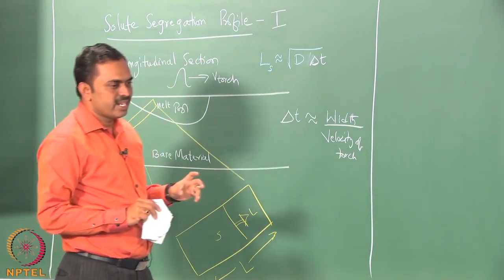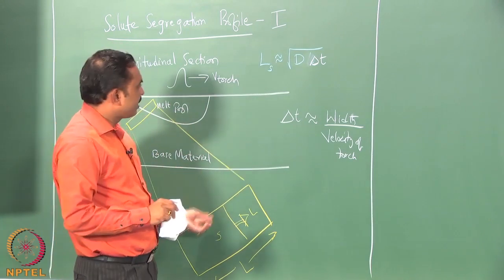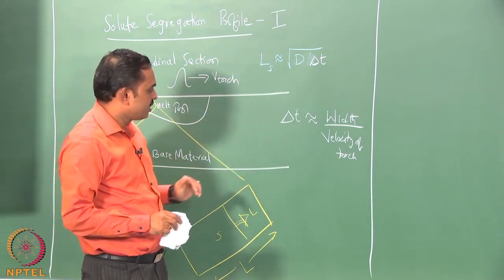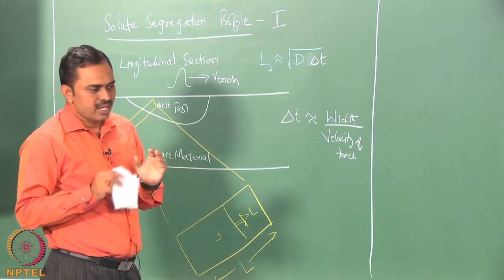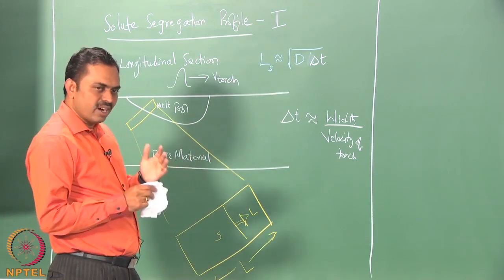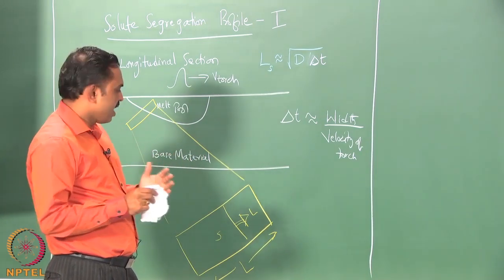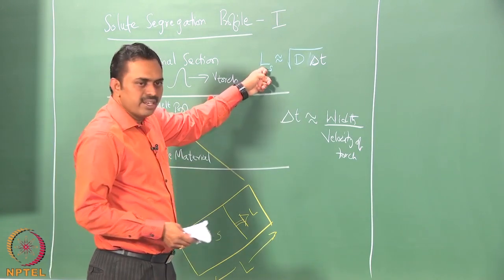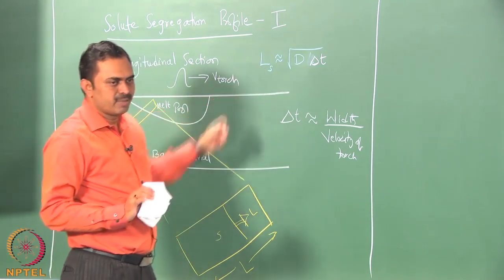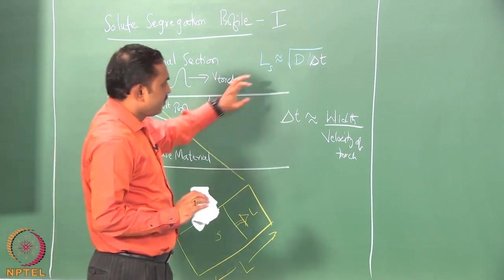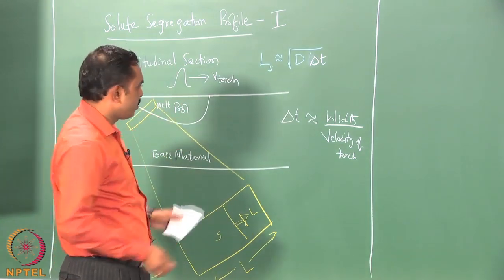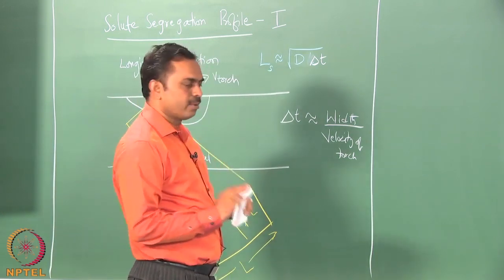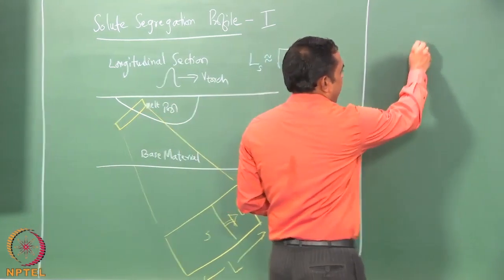This length scale tells us whether, for a given feature such as secondary or primary dendrite arm spacing, sufficient mixing occurs. If the feature length scale is smaller than the diffusion length scale, mixing is complete. If it is larger, mixing is not possible completely. This allows us to map conditions of good versus poor mixing.